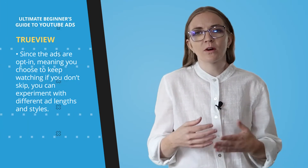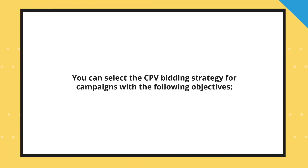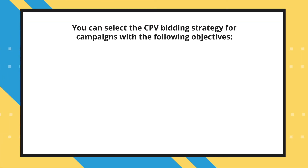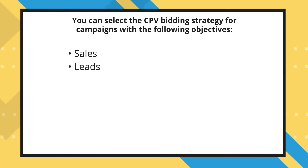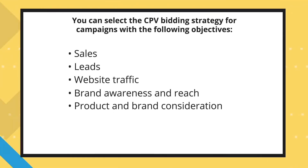You can experiment with different ad lengths and styles to see which works best. You can select the CPV bidding strategy for campaigns with the following objectives: sales, leads, website traffic, brand awareness and reach, and product and brand consideration. This option is also available if you choose no goal when setting up your campaign.